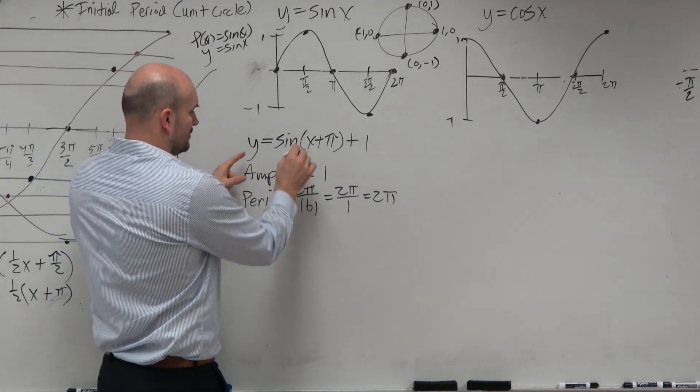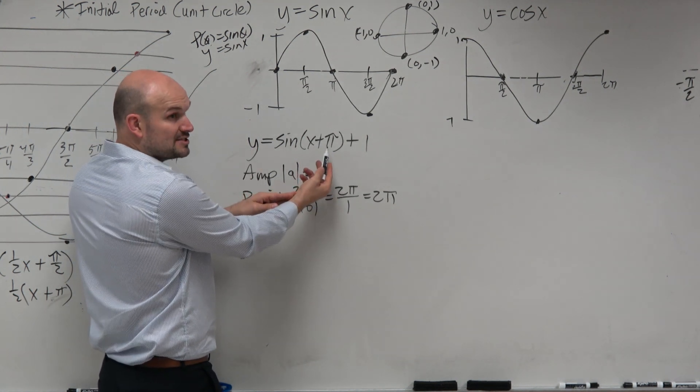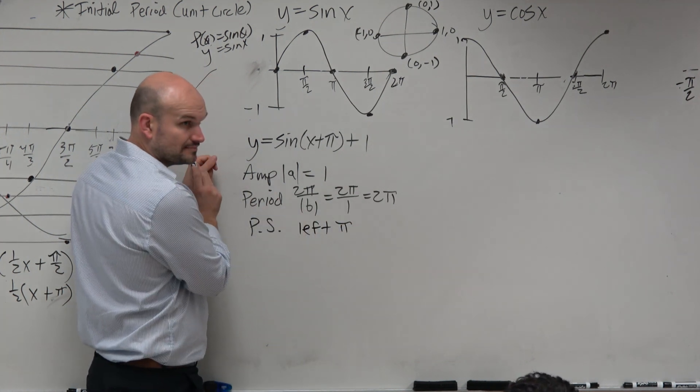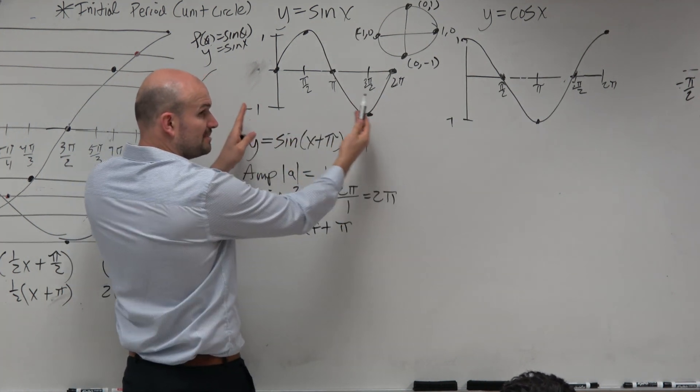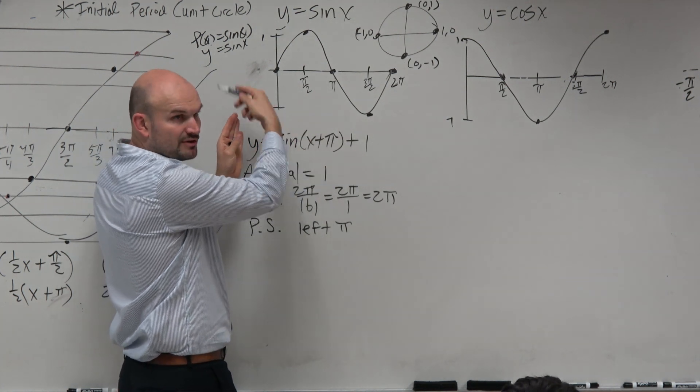But we see that we have a phase shift. You can see that we're adding π, so therefore, the graph is going to be shifted left π. So it's this graph basically being shifted to the left. Obviously, this is the initial period. The graph continues forever.